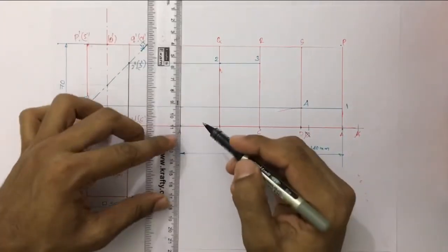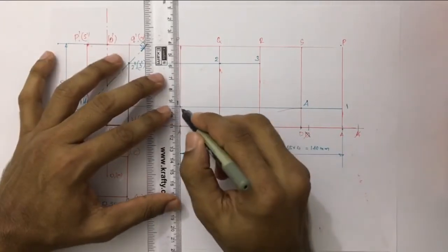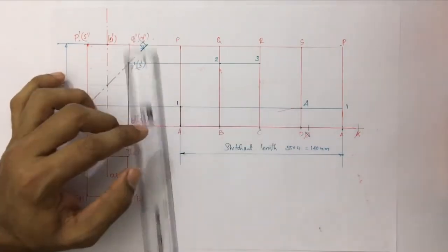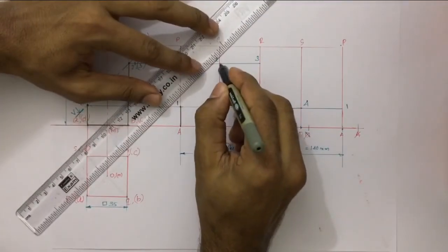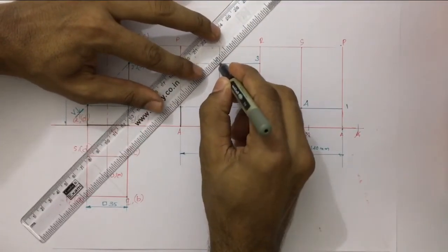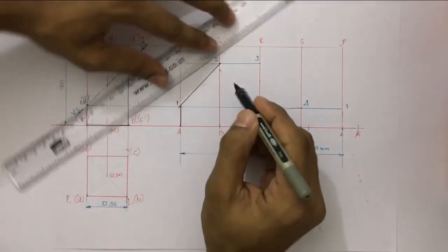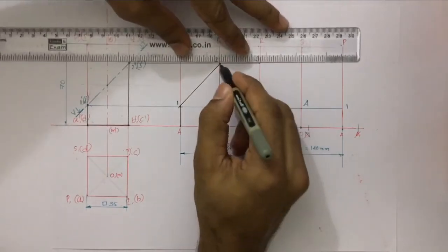The final geometry is darkened. The section points are connected with straight lines to complete the truncated development pattern.